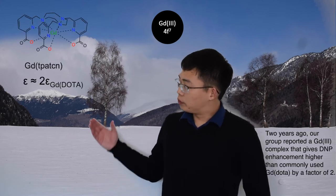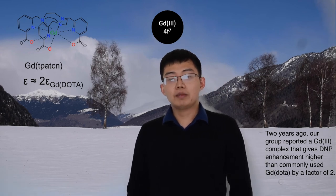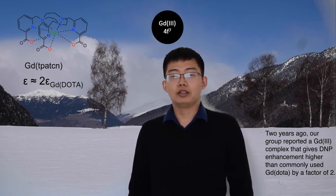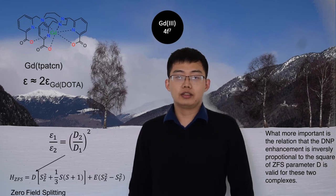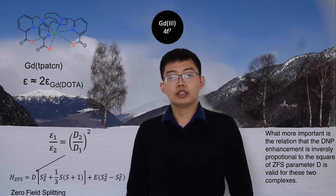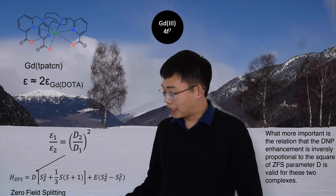The main limitation for GAT3 complexes is a relatively low enhancement. Two years ago, our group reported a GAT complex that gives DNP enhancement higher than commonly used GAT by a factor of 2. What's more important is we found the relation that the DNP enhancement is inversely proportional to the square of ZFS parameter D, and this is valid for these two complexes.